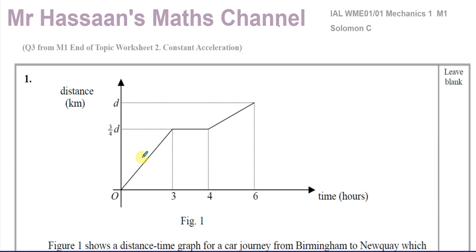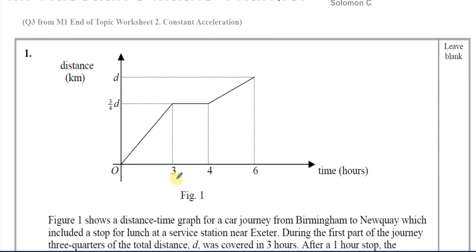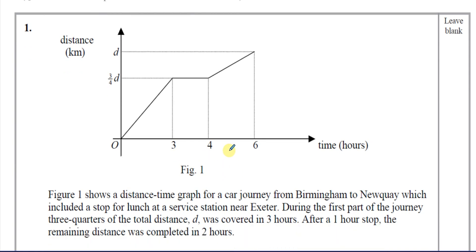Here we've been given a distance-time graph — not a velocity-time graph, not a speed-time graph, it's a distance-time graph. Figure one shows a distance-time graph for a car journey from Birmingham to Newquay, which included a stop for lunch at a service station near Exeter. During the first part of the journey, three quarters of the total distance was covered in three hours. After a one-hour stop, the remaining distance was completed in two hours.